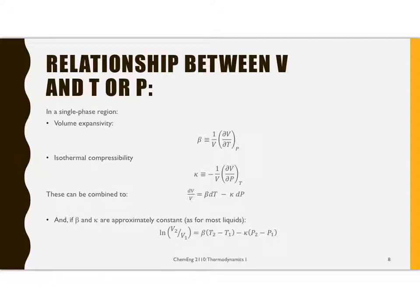These are both just definitions, but the volume expansivity is the way that volume changes with temperature if you hold the pressure constant. We define beta to be this change in volume with temperature for a constant pressure process divided by the specific volume, or times the density if you prefer. This is the volume expansivity, and it's just a definition.